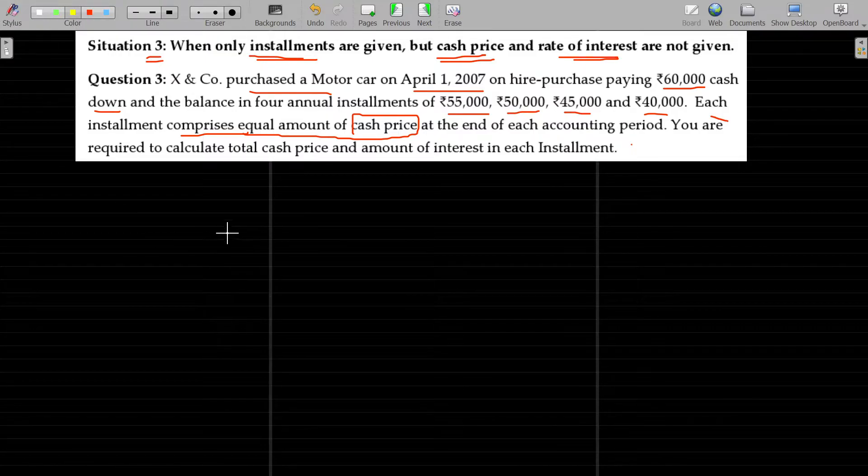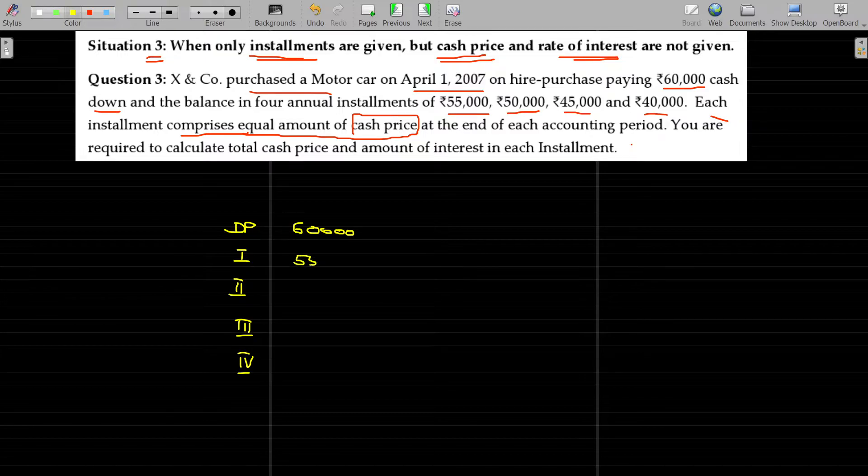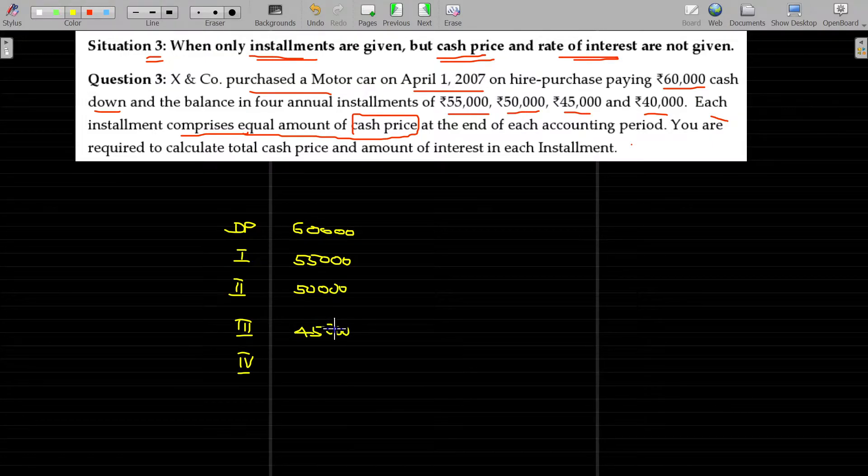So, down payment and installments number 1, 2, 3, and 4. Down payment being 60,000. First installment being 55,000, second installment 50,000, third installment 45,000, fourth installment 40,000.